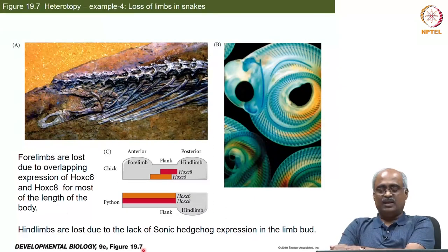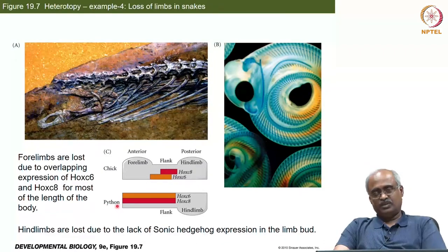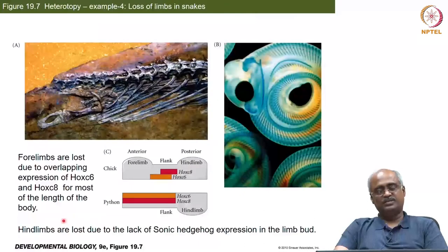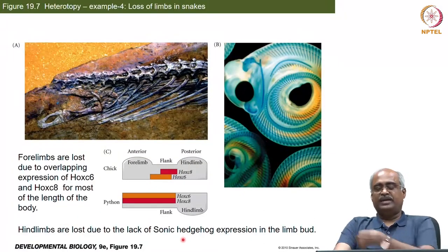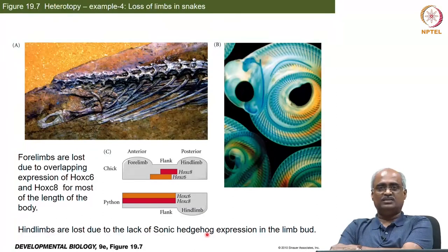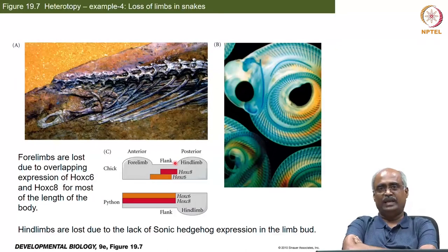The hind limbs are lost through a different mechanism. In the limb bud structure, Sonic Hedgehog expression is lost, and Sonic Hedgehog is required for the limb bud to grow; due to its loss, hind limbs are also lost in modern-day snakes. So this is how snakes lost their limbs — again through heterotopic expression changes in genes.